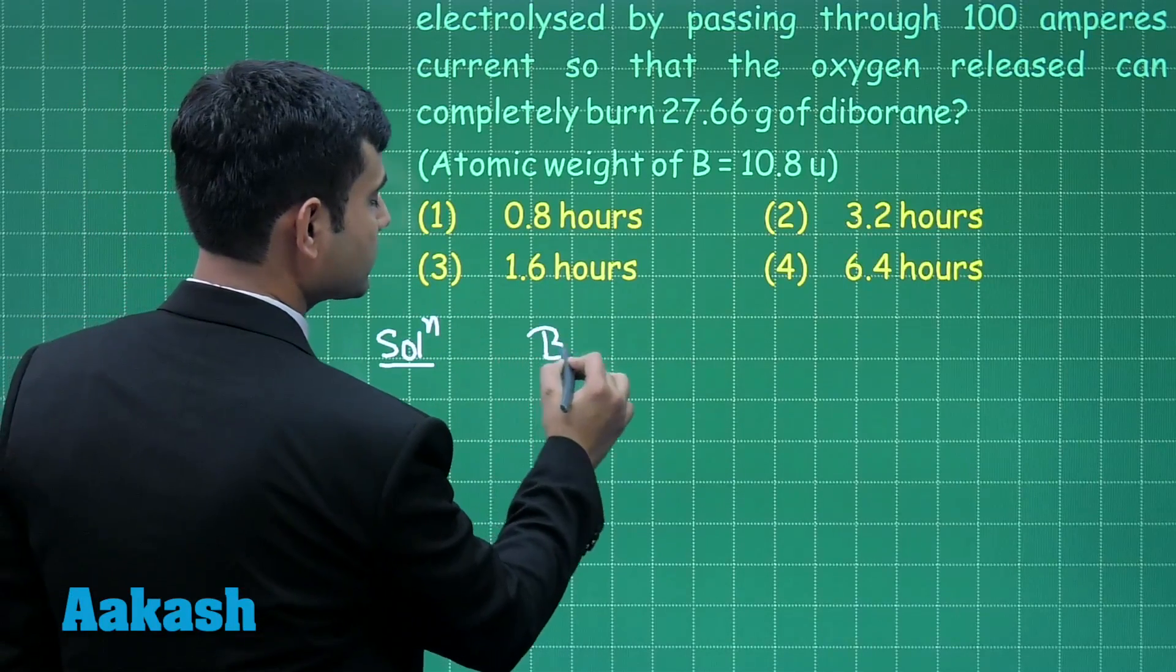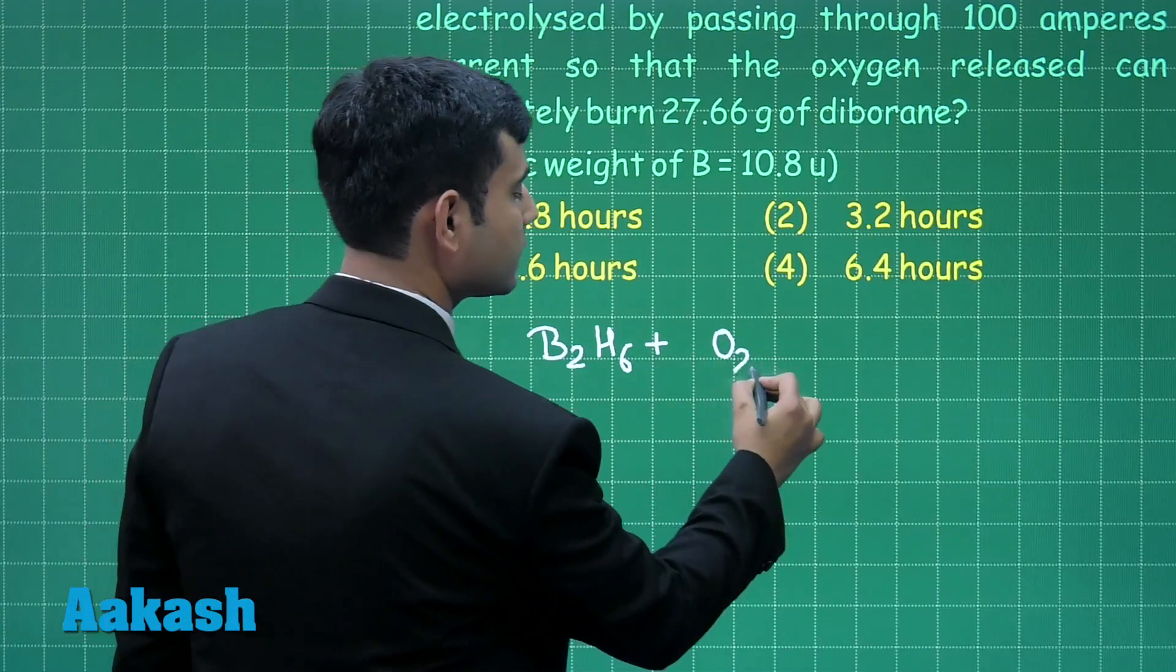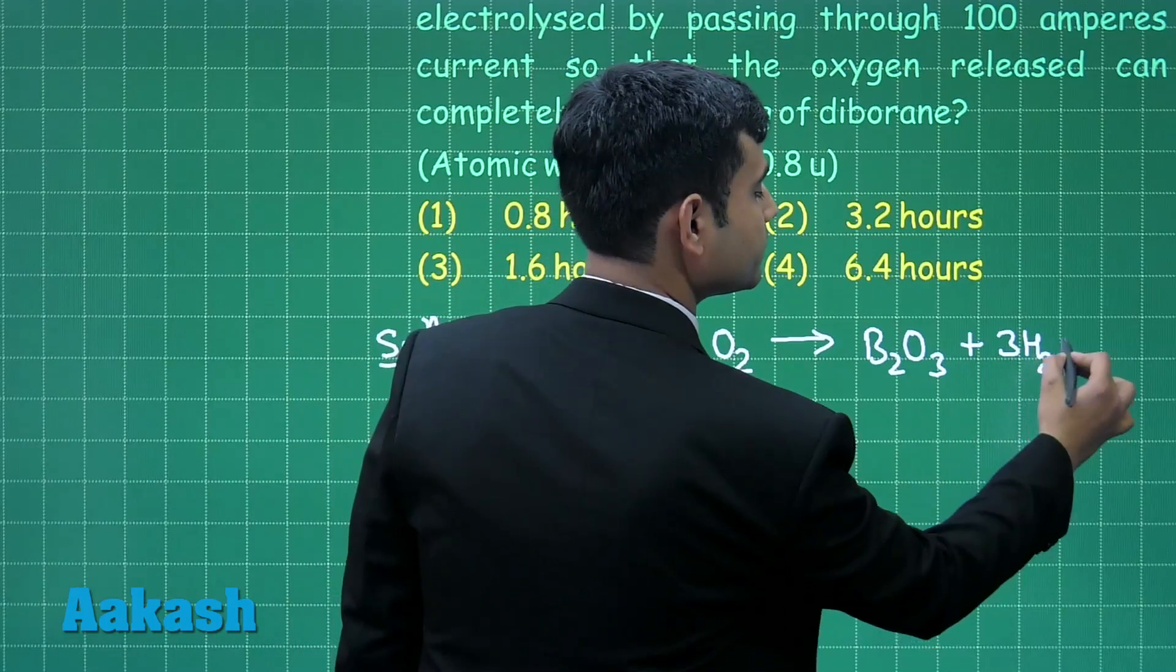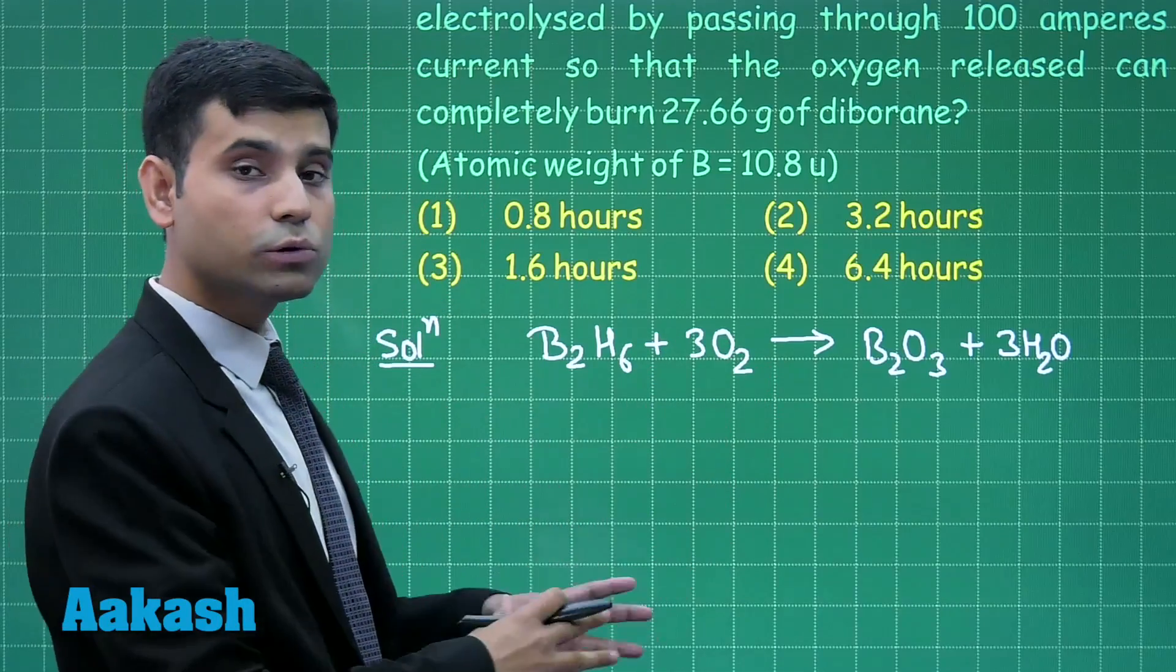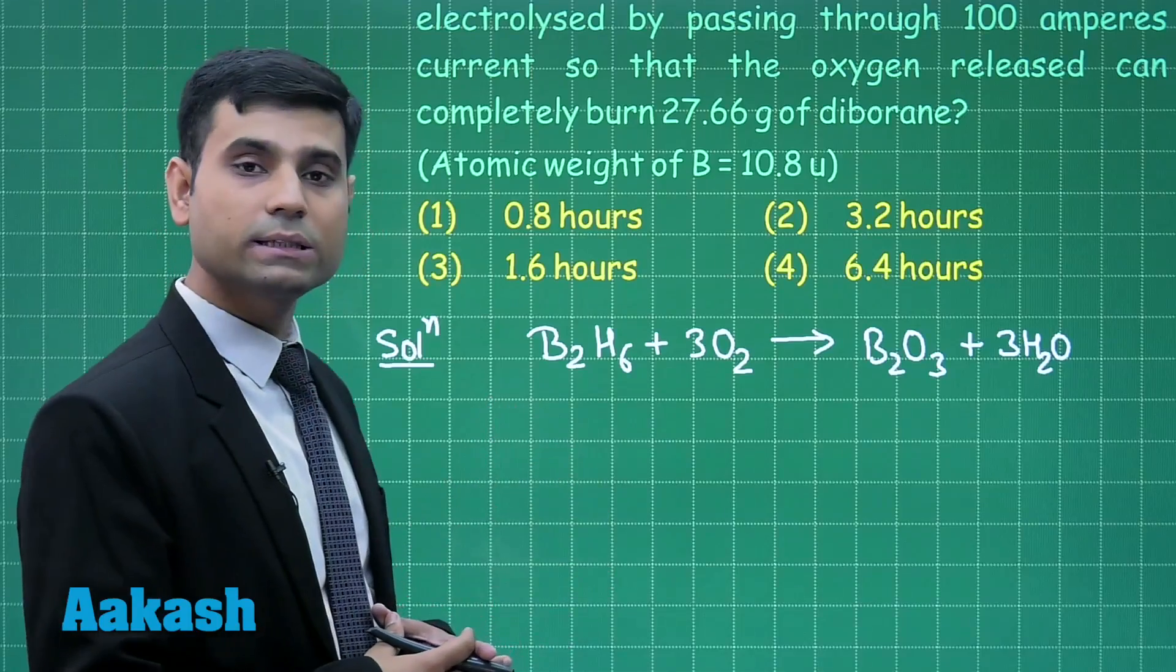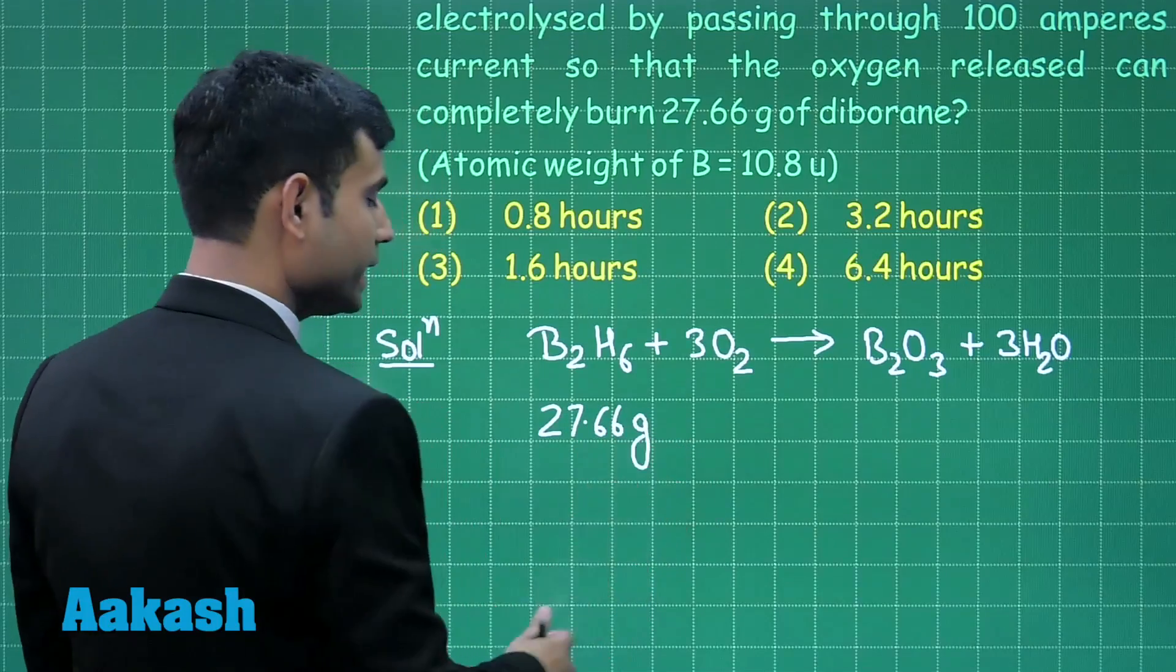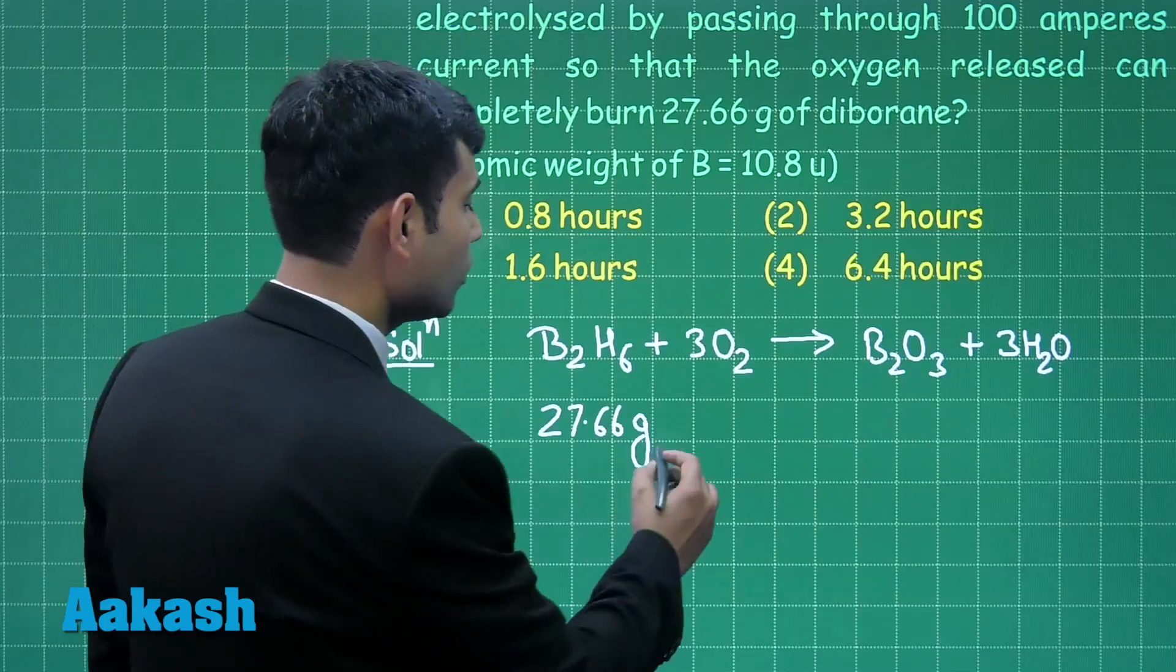If I talk about B2H6, when it reacts with oxygen, it gives us B2O3 plus 3 moles of H2O. In this reaction, we can see, we need 3 moles of oxygen for 1 mole of B2H6. The mass of 1 mole of B2H6 is around 27.66 gram. So, 27.66 gram of B2H6 requires 3 moles of oxygen.